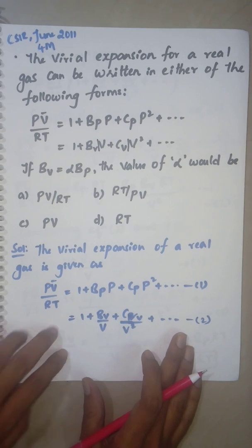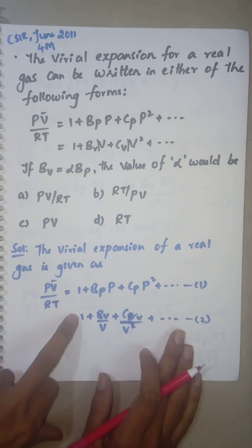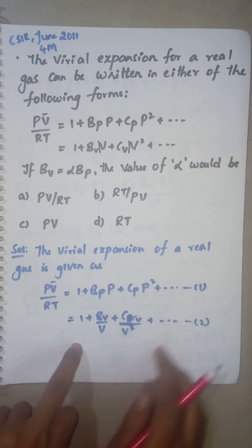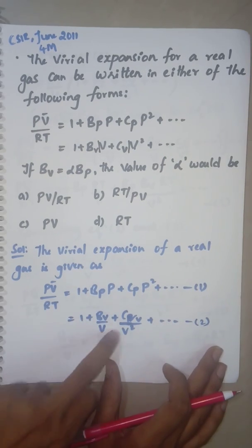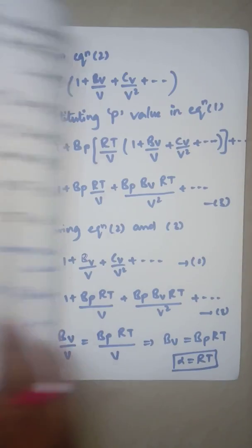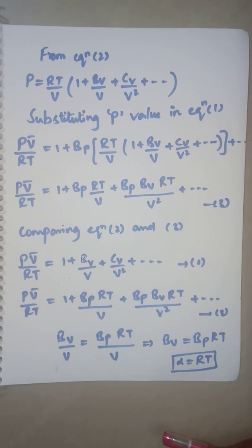From equation 2, I will take the V/RT value to the right hand side. Then it becomes pressure equals RT/V into the whole bracket: 1 + BV/V + CV/V².